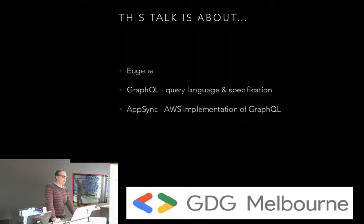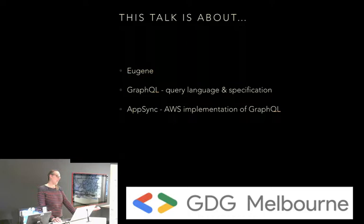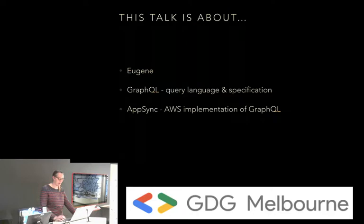So what I'm going to talk about: first I'm going to talk about my company Eugene, just to set some context of how we use GraphQL and AppSync. Then I'm going to talk about GraphQL itself, which is the query language and the specification. And then AppSync, which is the AWS implementation of GraphQL — everyone knows AWS stands for Amazon Web Services.